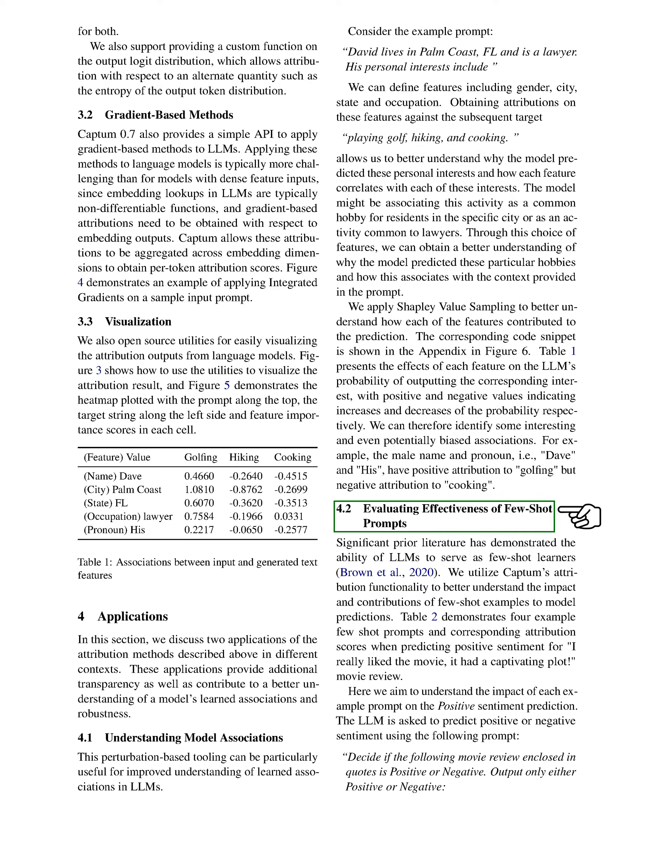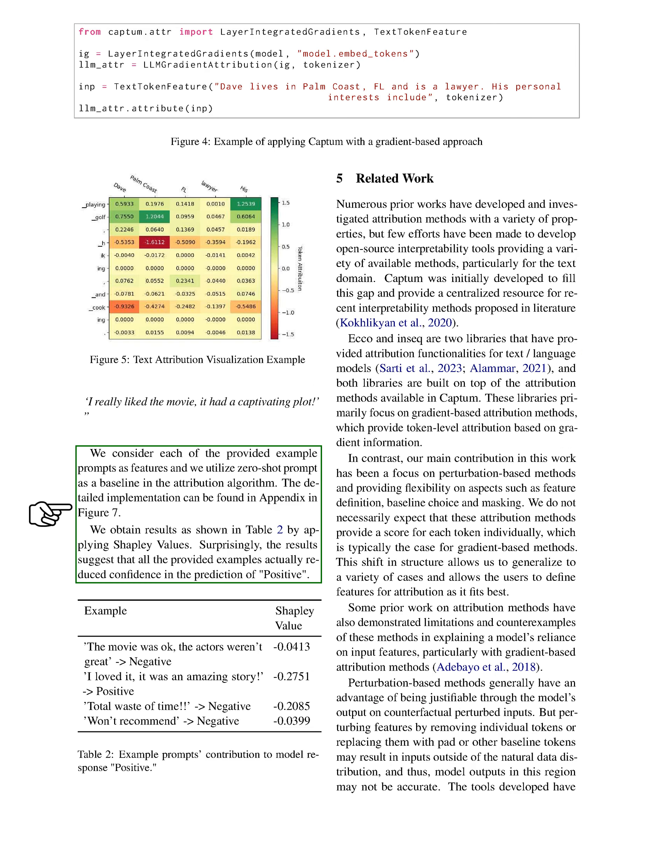The second application is evaluating the effectiveness of few-shot prompts. We utilize our attribution functionality to understand the impact and contributions of few-shot examples to model predictions, considering each provided example prompt as a feature and using the zero-shot prompt as a baseline in the attribution algorithm. Surprisingly, the results suggest that all the provided examples actually reduced confidence in the prediction of positive sentiment.